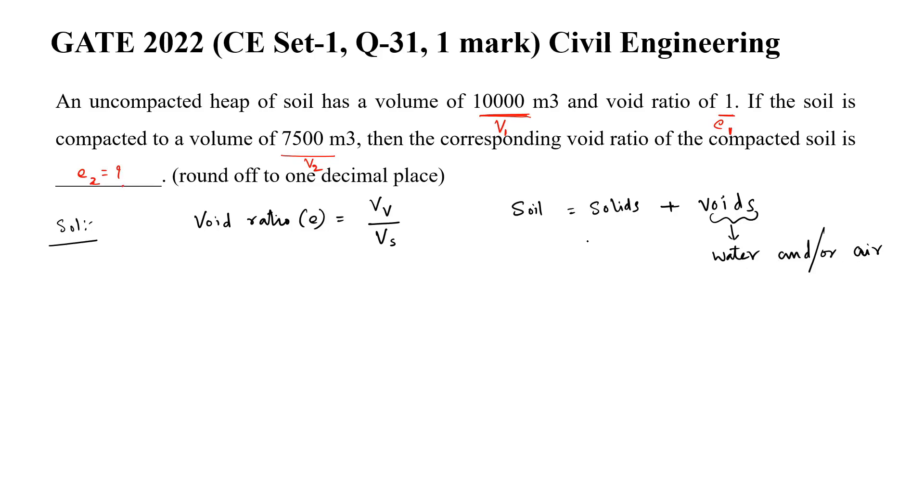Anyway, so solids, you cannot change the volume of the solids. Solids means what, soil particles. You cannot change the solids. If the volume of the soil is changing, so volume of the soil can be referred by just V, whereas volume of the solids can be referred by Vs, volume of the voids can be referred by Vv.